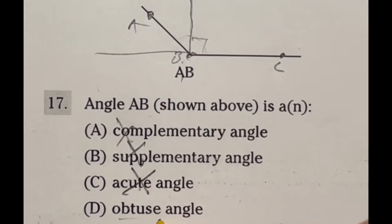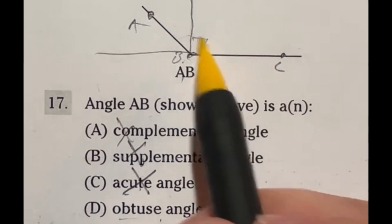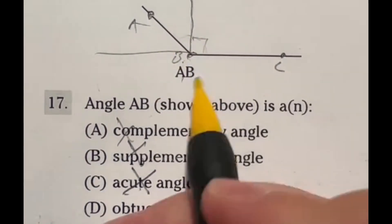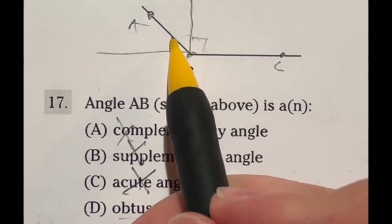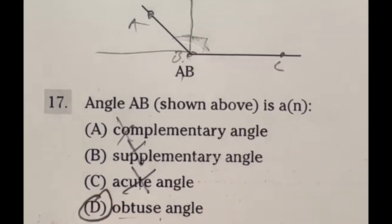Last but not least, an obtuse angle is one that is larger than 90 degrees. So in this case, that is larger than 90, this angle right here. So our answer is D.